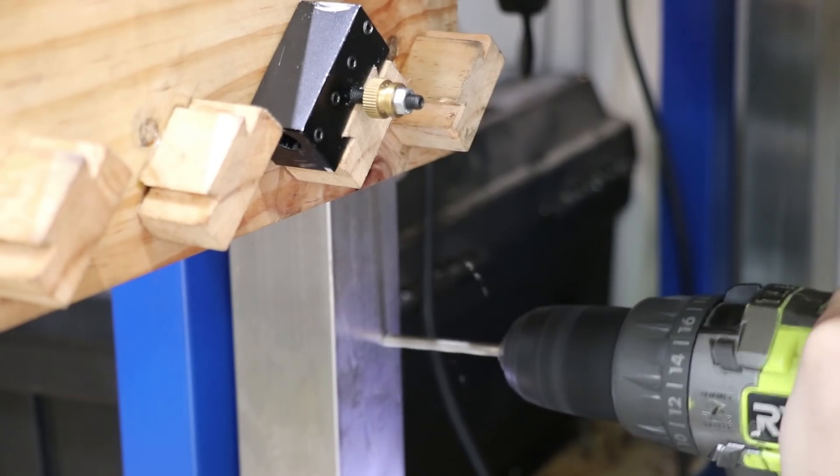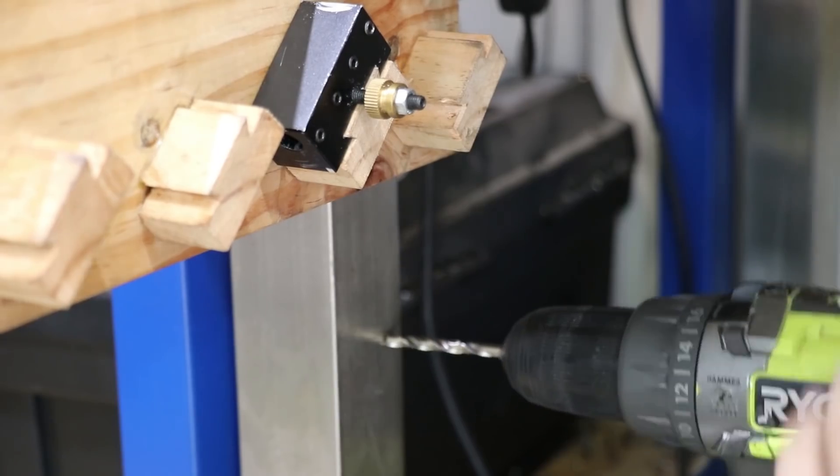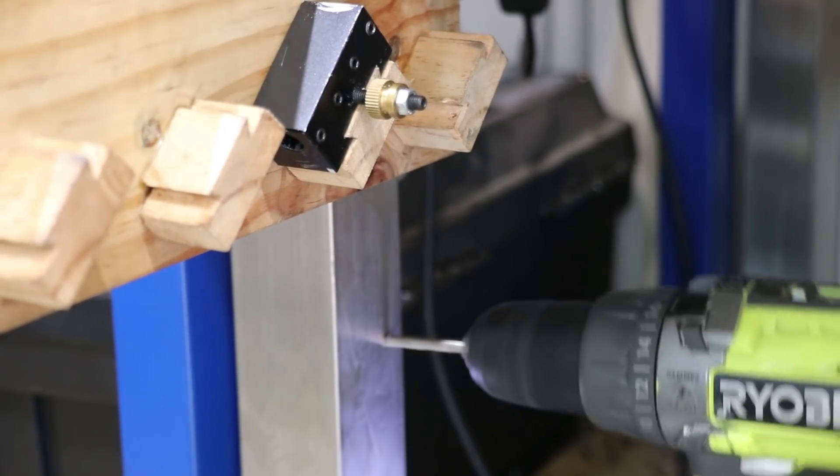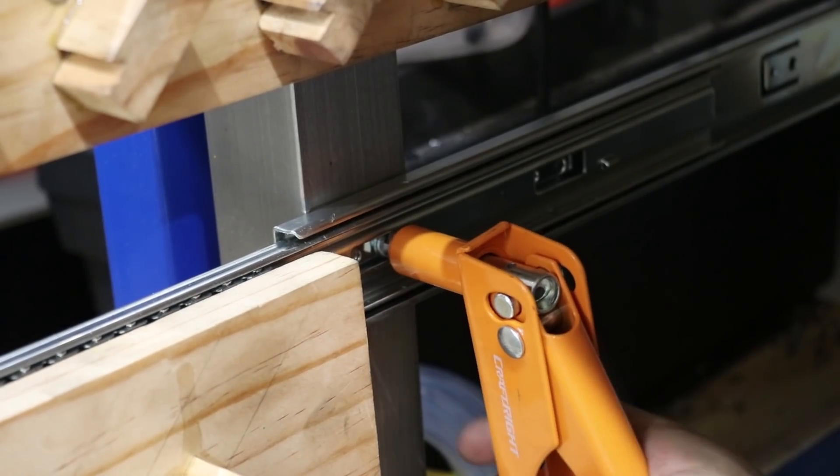The last time I did this, I bolted the runners to my workbench, but this time I'm just going to use some pop rivets, because it's a lot easier and a lot faster.